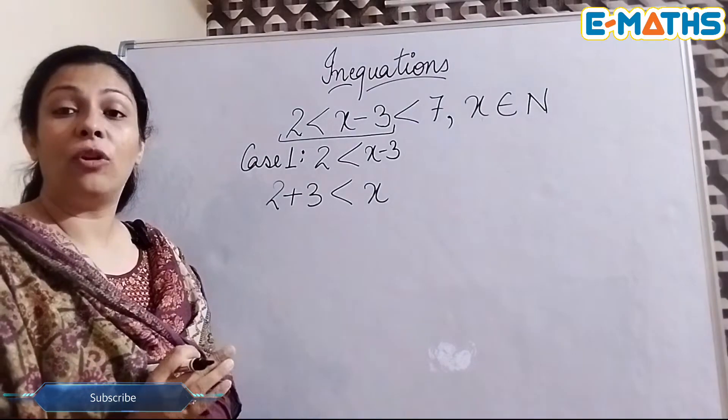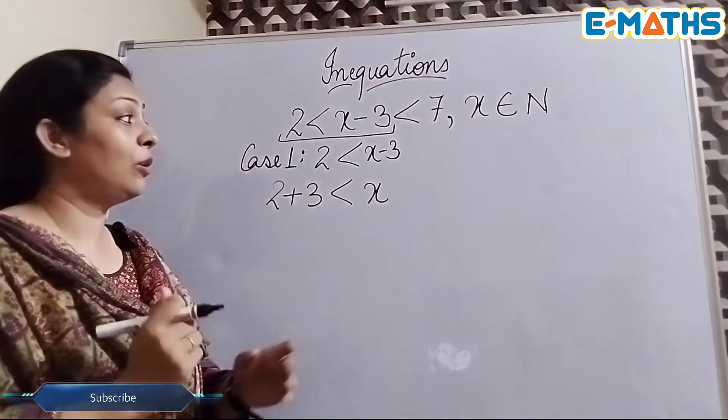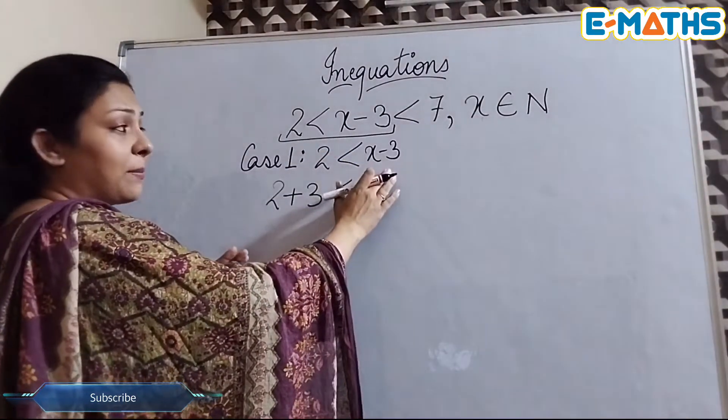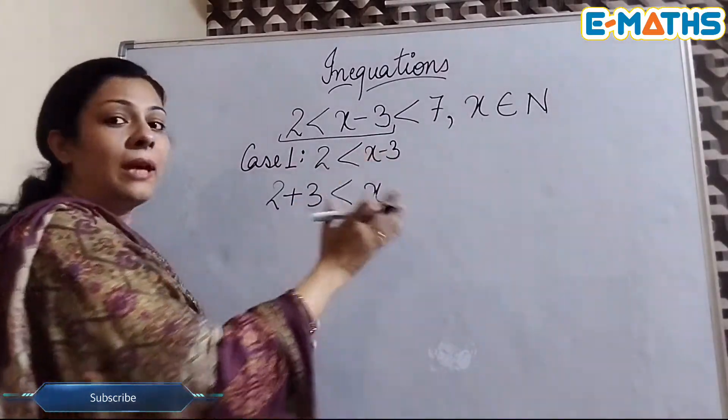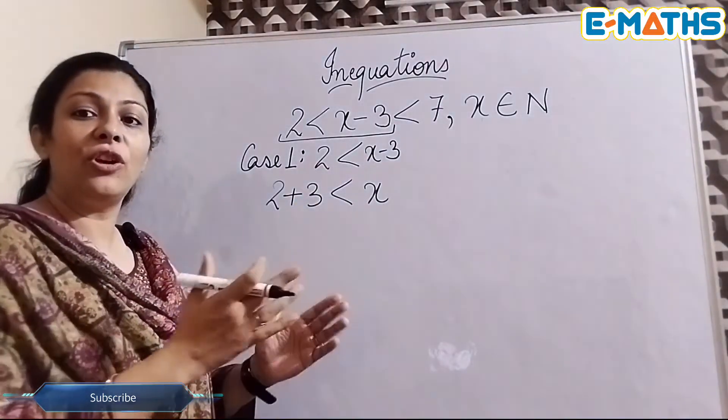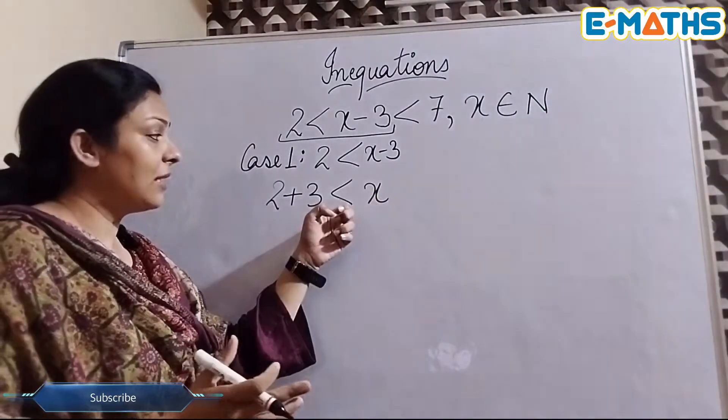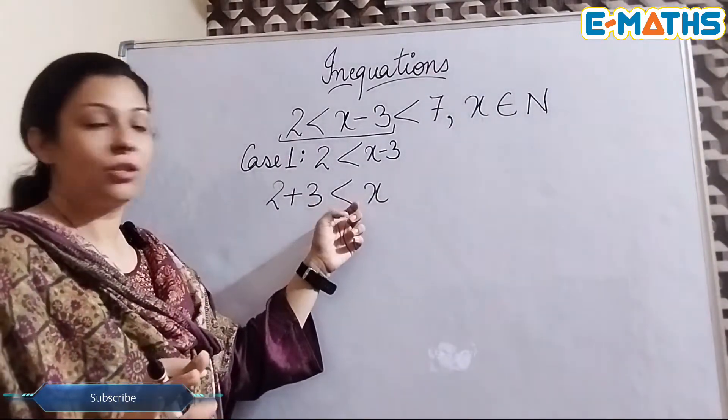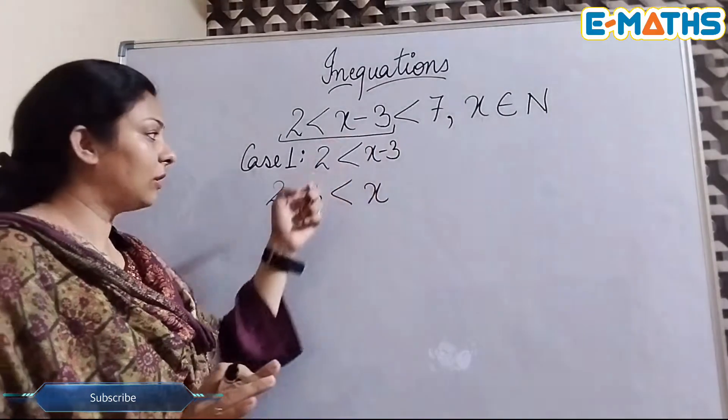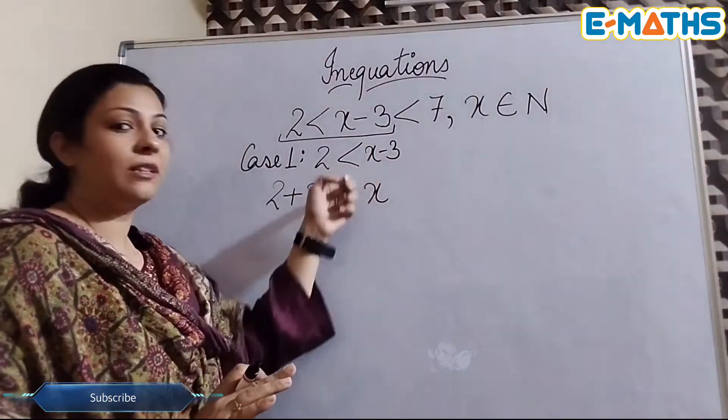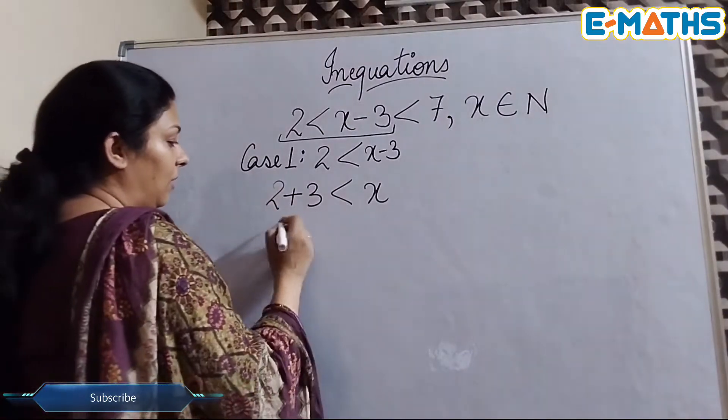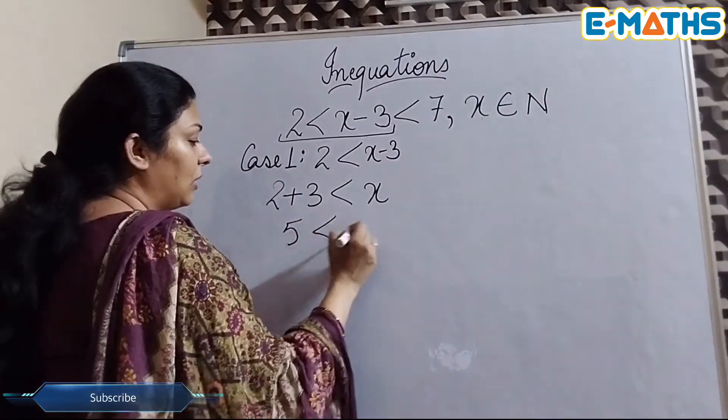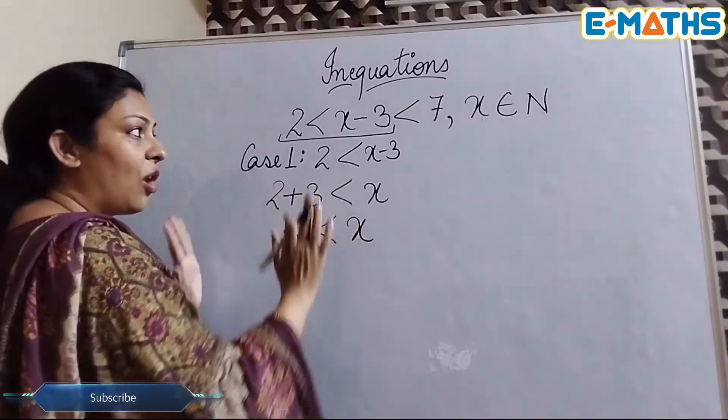In my previous video I have already explained that when you see this expression x - 3, this term is either being added or subtracted. So when you are transposing such a thing, this inequality sign doesn't change. So even if you are bringing this minus 3 on this side, it will not change this inequality sign. So we are going to solve this. Here we are getting 5 < x. We have solved case 1.